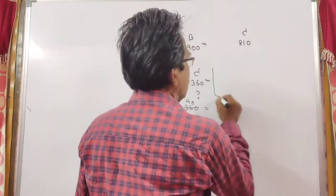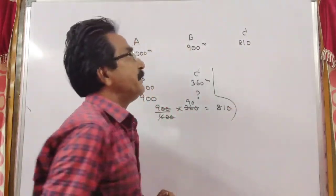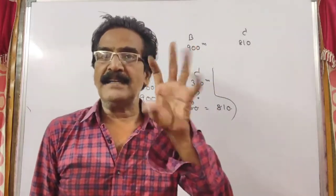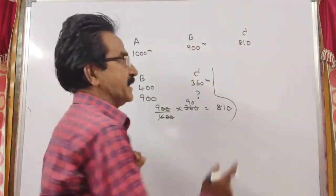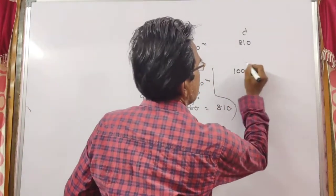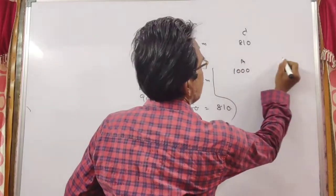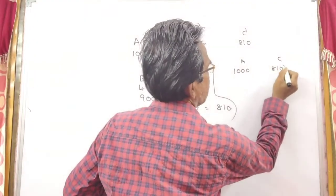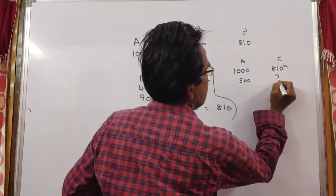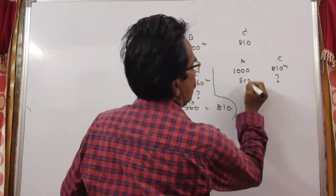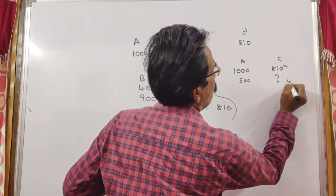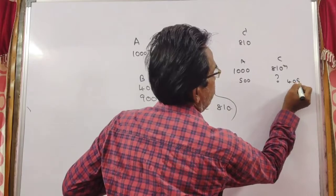Now we want to find how many meters A can beat C in a 500 meters race. If A runs 1000 meters, C runs 810 meters. So if A runs 500 meters, C runs half of 810, which is 810 divided by 2, giving 405 meters.